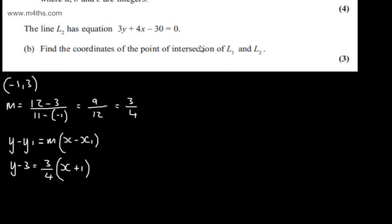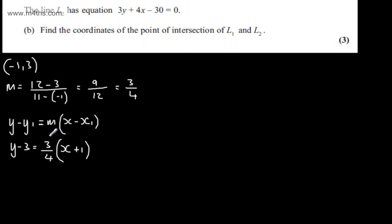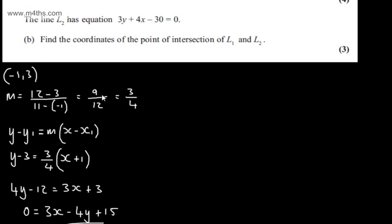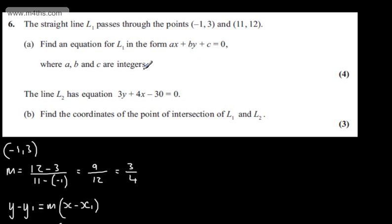I need to put this in the form AX plus BY plus C is equal to 0, so I'm going to multiply both sides of the equation by 4. 4Y minus 12, then expanding the brackets on the right, we'll have 3X plus 3. I'm going to subtract 4Y from both sides and add 12. That will give me 0 is equal to 3X minus 4Y plus 15. So that is an equation for line L1 in the form AX plus BY plus C equals 0, where A, B and C are integers.